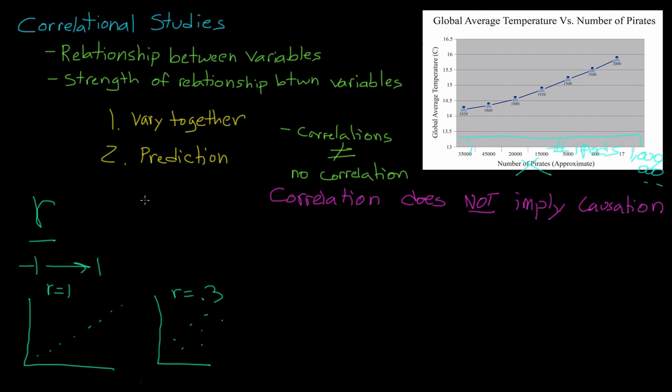The way to think about this is that positive numbers equal positive correlations. And the closer this correlational coefficient is to one, the stronger that relationship, the more clearly defined it is.